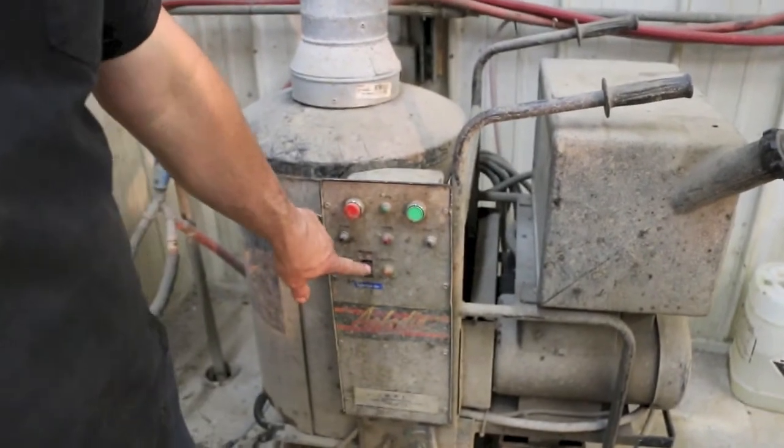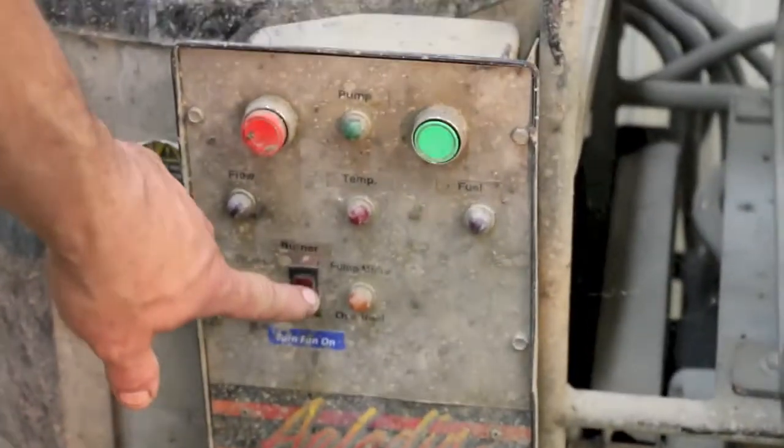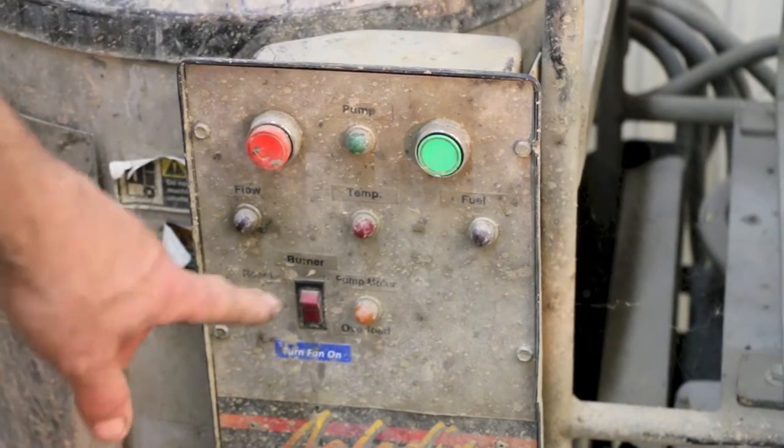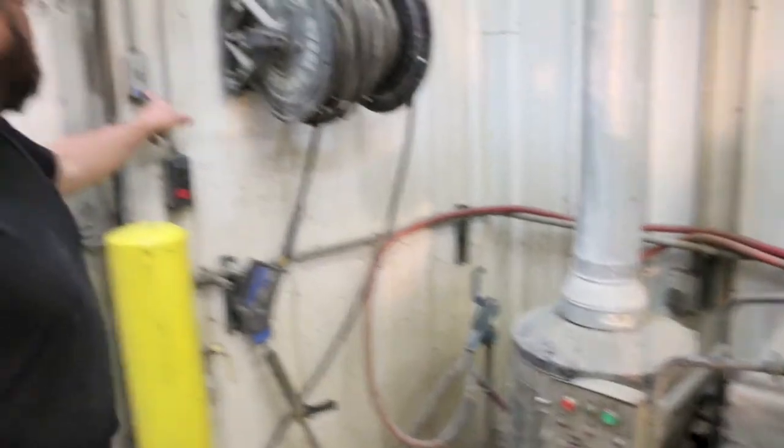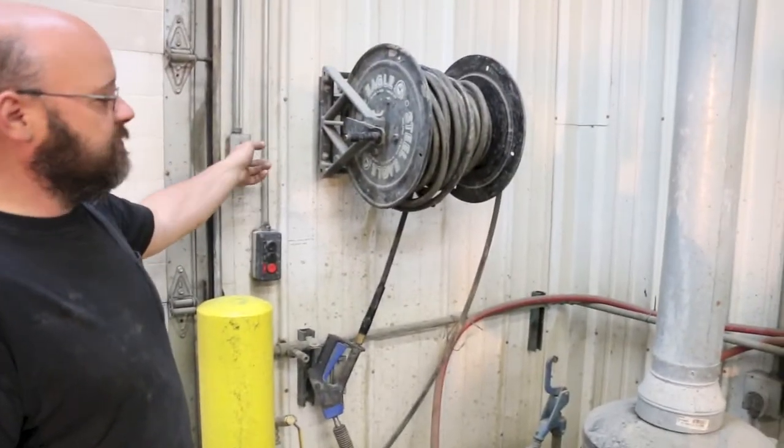You've got the switch here, which is for the burner for the heat. Up is on, down is off. If you are going to use the burner for the heat, make sure you turn the exhaust fan on now, because that will take the smoke outside.